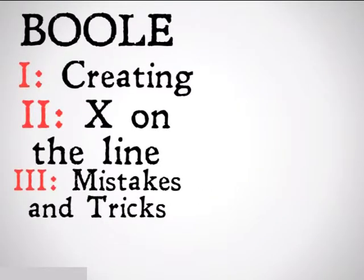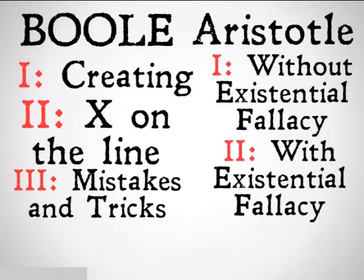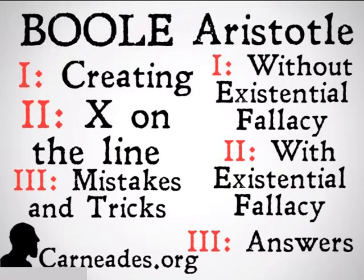Those were some tips and tricks for Boolean Venn diagrams. Next up, we're going to be looking at Aristotelian Venn diagrams and the existential fallacy, and we'll do some problems and get some answers. Watch a new video every single day for 100 days here at carneades.org, and stay skeptical, everybody.